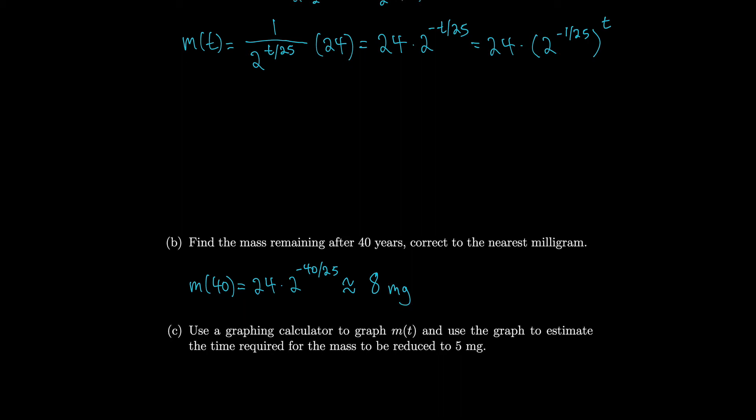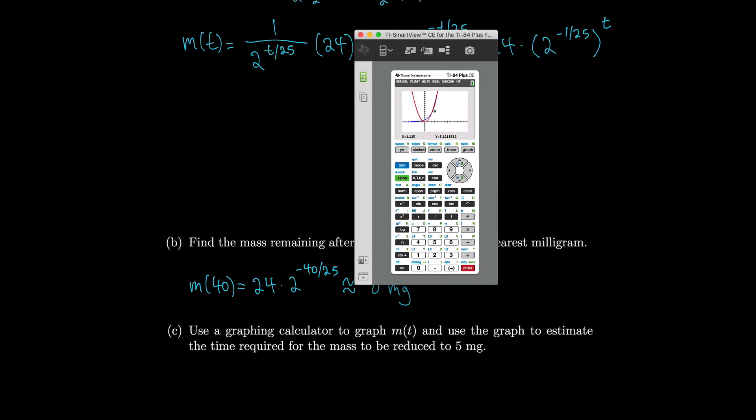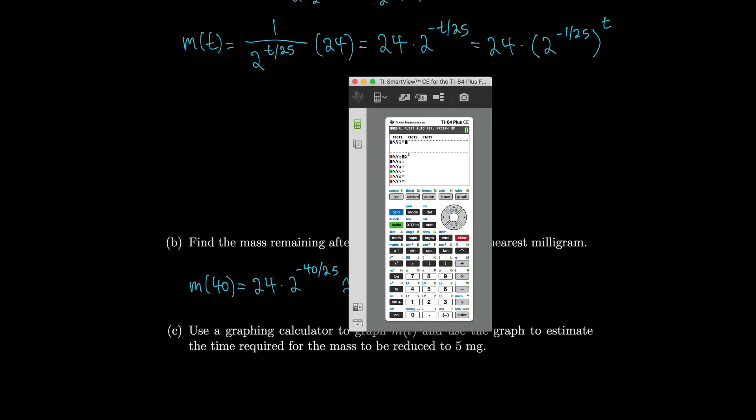So let's use a graphing calculator now to estimate the time required for the mass to reduce to 5 milligrams. So we'll get back our calculator. We have to go to y equals again. We're going to plug in our formula for m of t. So 24 times 2 to the minus x over 25. That looks good. Let's clear our x squared so it doesn't get in the way. And let's go to zoom so that I get a nice standard view.